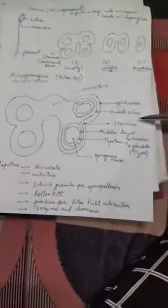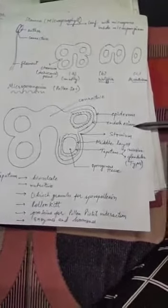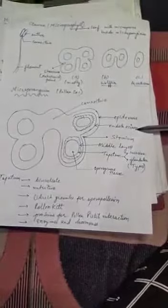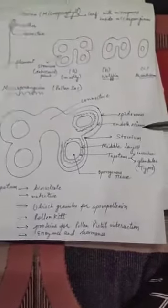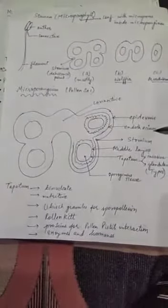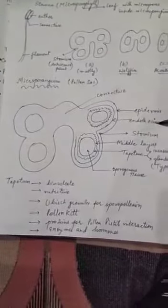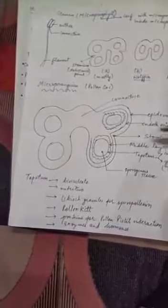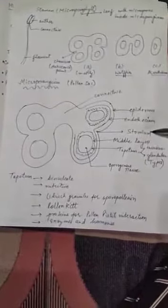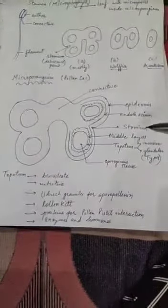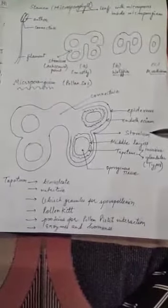It's a single layer generally and then inner to it is endothesium. Endothesium is the layer which carries the fibrous thickening and these thickenings are made up of cellulose and lignin and they are important as they are hygroscopic in nature. So when the anther has to dehisce or it has to crack open to release the pollen grains, endothesium plays an important role. There is a particular place in the endothesium which is called as the stomium. Stomium is the place where thickenings are absent. So whenever the anther is going to crack open, it opens at the stomium point because it is the weakest portion.